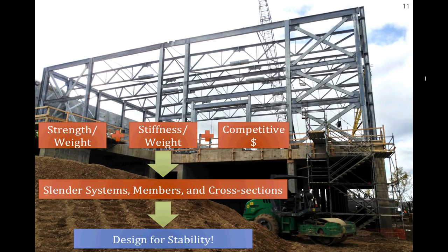I always like to start lectures with a steel building to think about. A few neat things about structural steel are its strength-to-weight ratio — about four times better than concrete — and its stiffness-to-weight ratio, about three times that of concrete. Of course, we also need competitive pricing. Combining these three factors, what you end up with are very slender systems, members, and cross-sections. When you have something slender, the mode of failure is often buckling. So the name of the game in structural steel is often designing for stability.